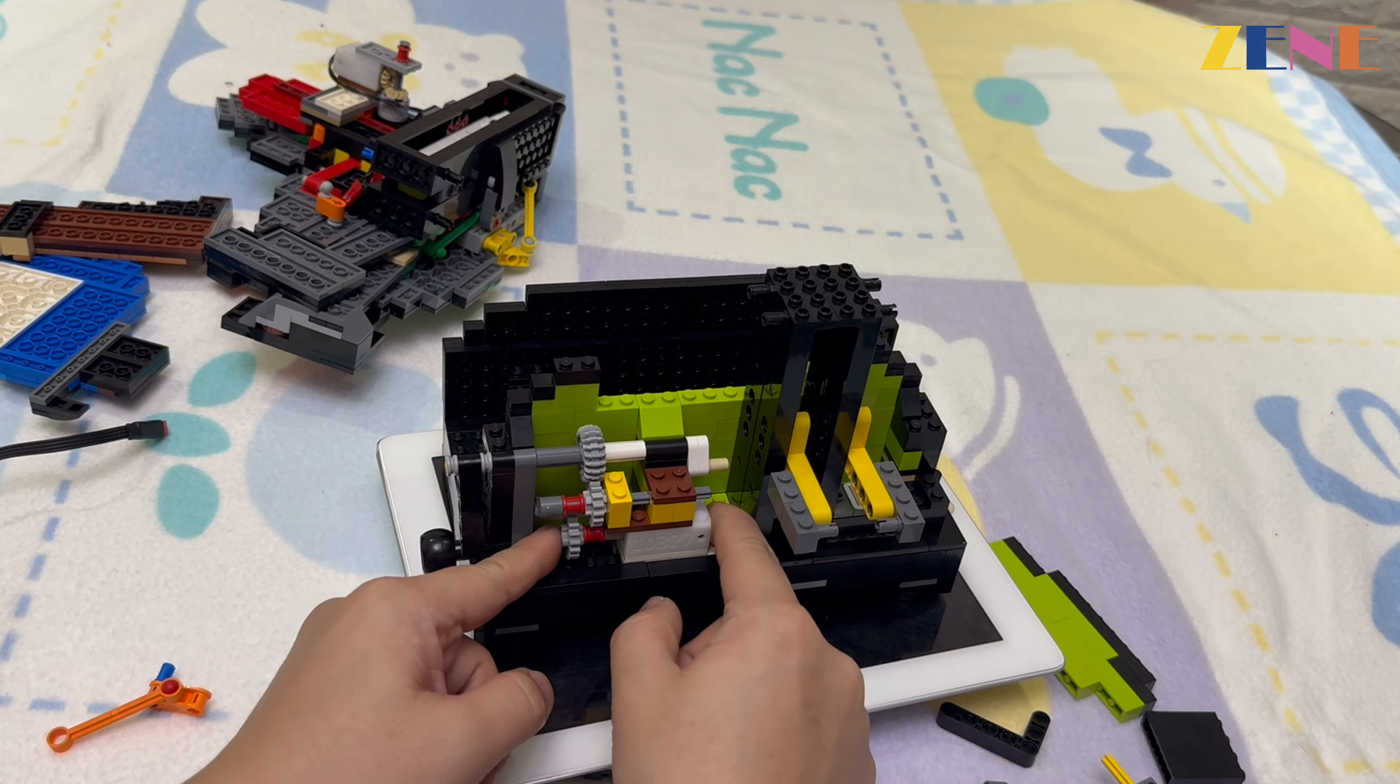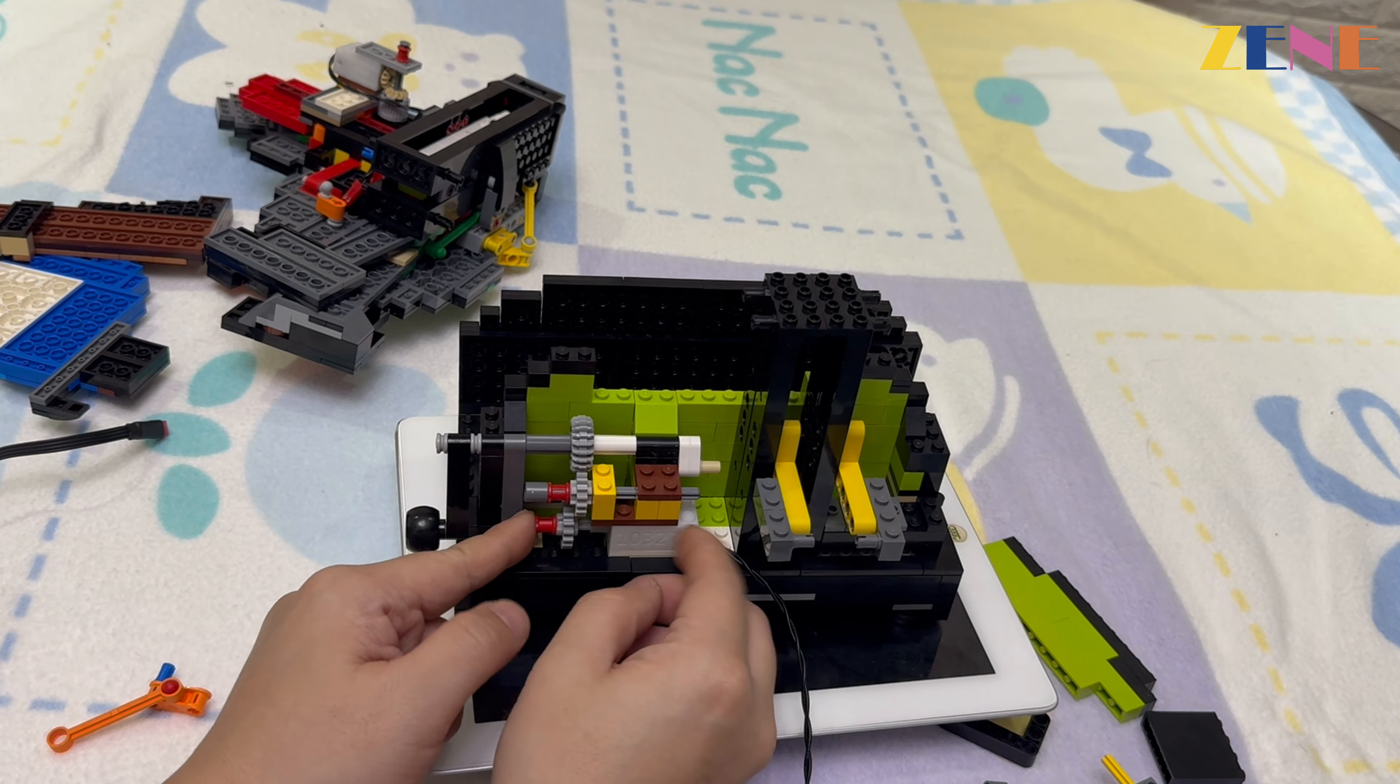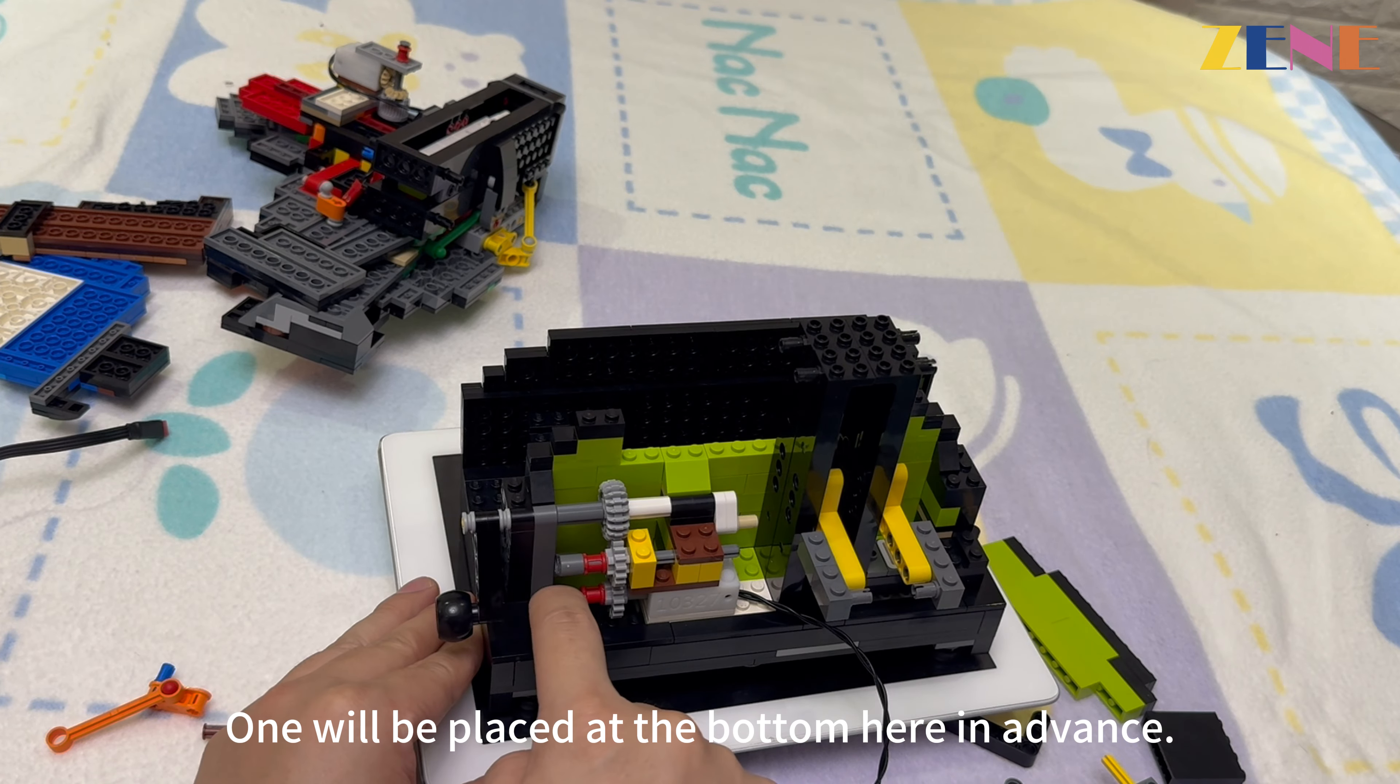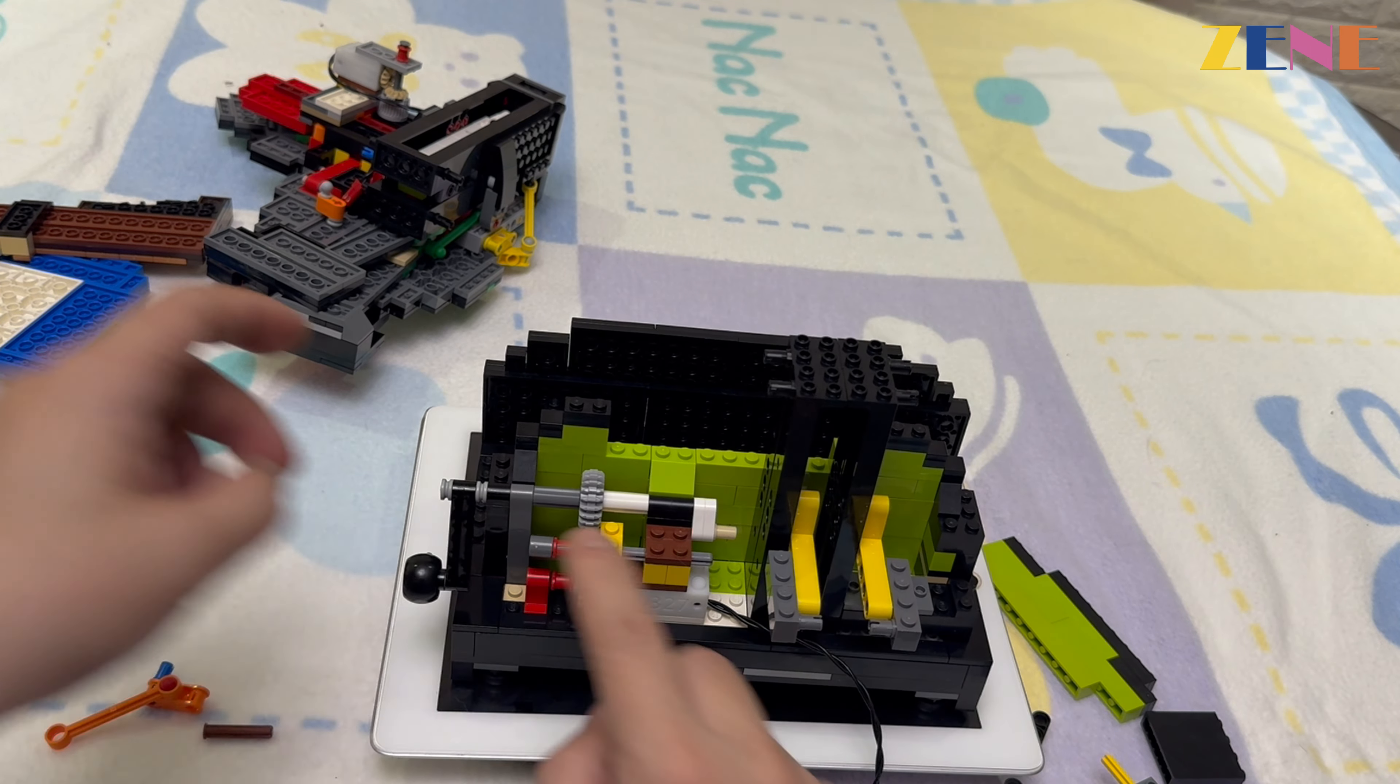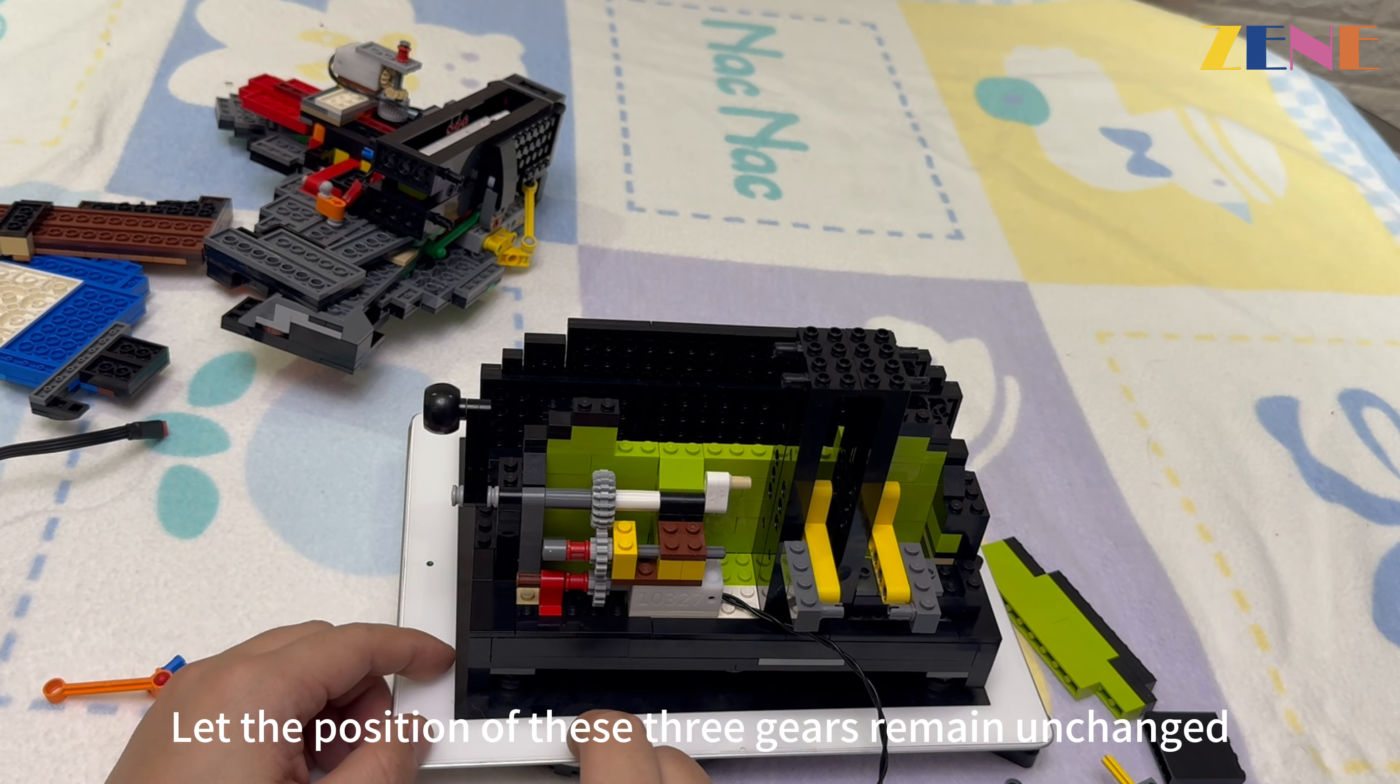Excuse me, it's installed upside down. It should be like this. And what about the motor below? Do you need it too? One will be placed at the bottom here in advance. There is also a 1-2 brick hole in the manual, brick plus a yellow one too. What happens when you level it? Then use a 1x3 as a guide. Let the position of these three gears remain unchanged. The next step is recovery.